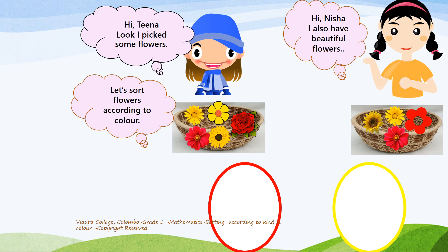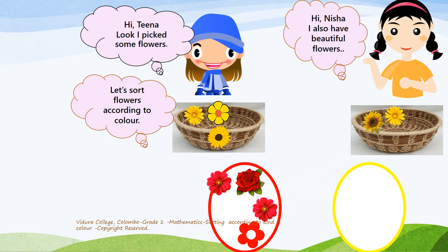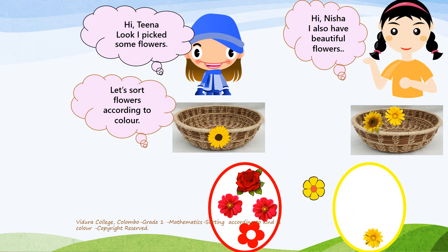Earlier, we learned how to sort according to kind. Now we are going to learn how to sort according to color. Let's do it. First, we will put red flowers into the red circle. Then we will put yellow flowers into the yellow circle, like this.